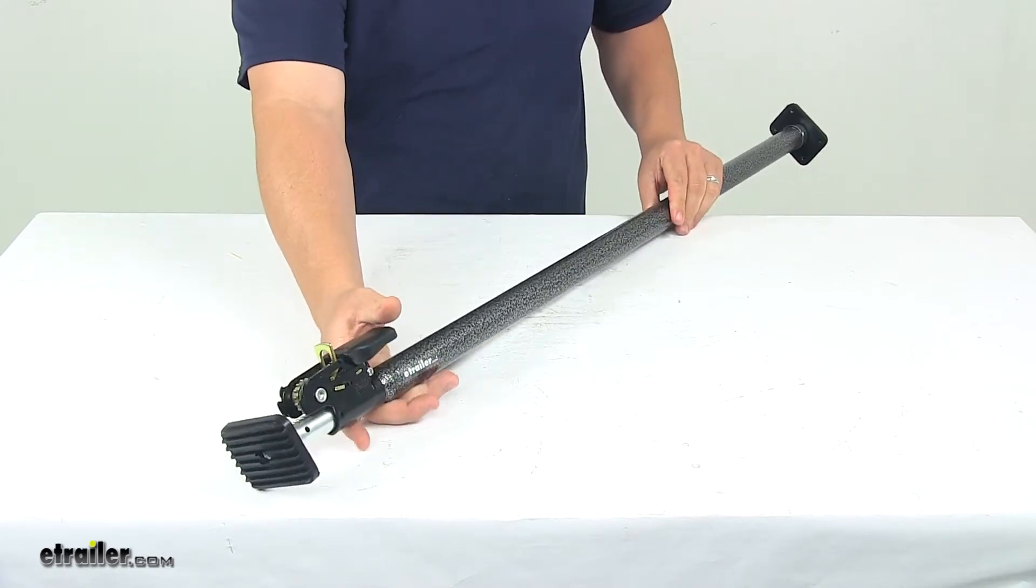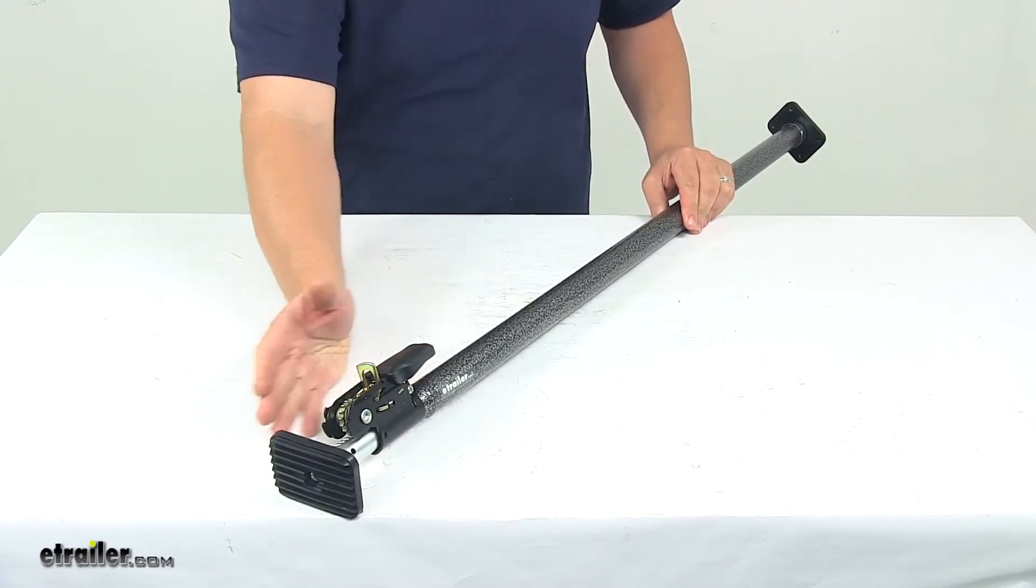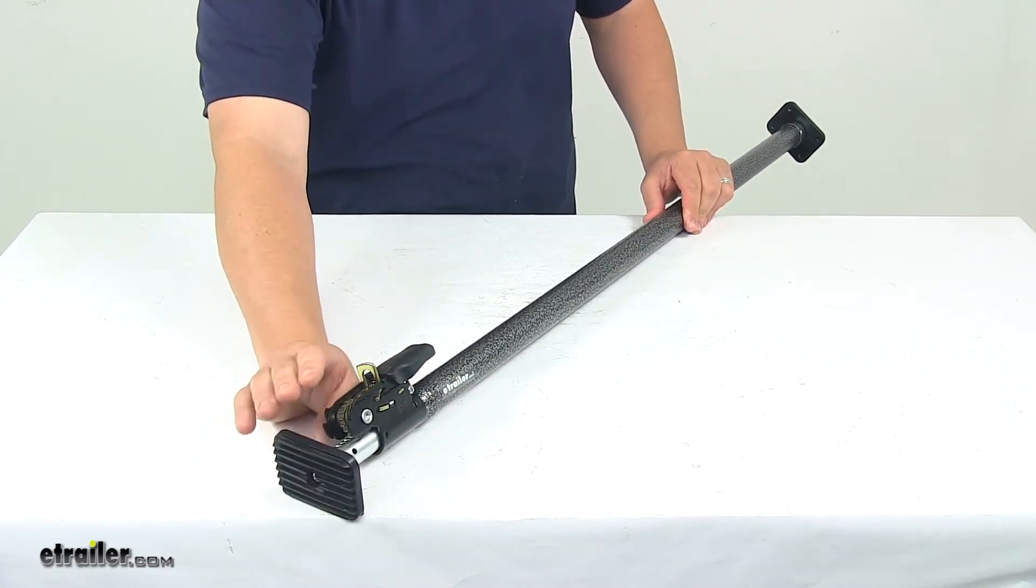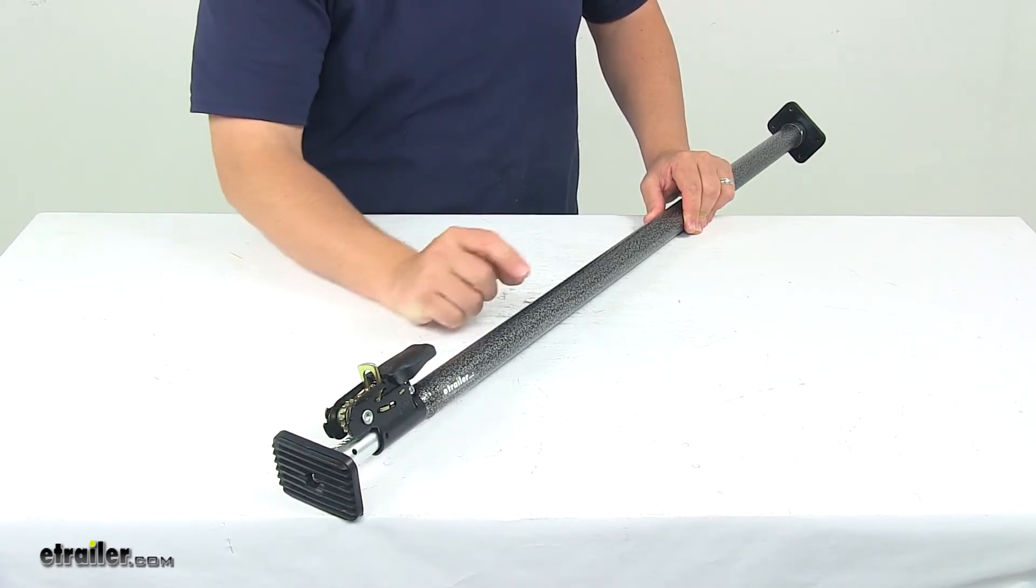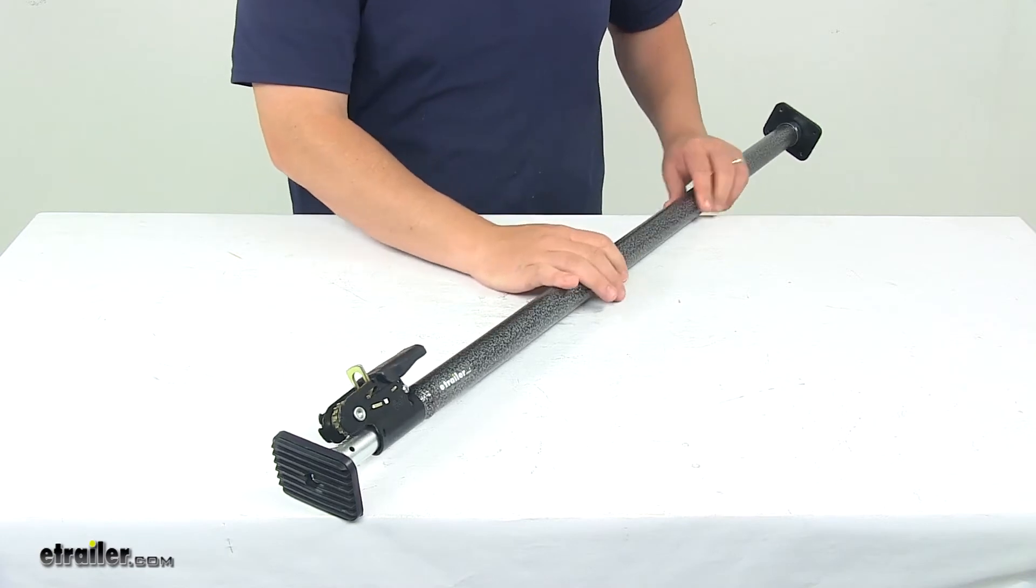So it's very easy to adjust, easy to operate, no tools required. The pads measure around three and one eighth inches long by two and three eighths inches wide. And then the bar diameter, this portion, is an inch and a quarter.